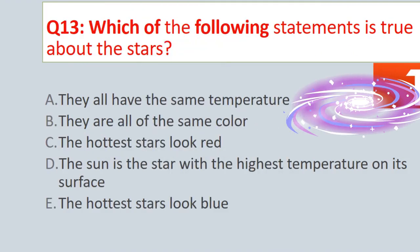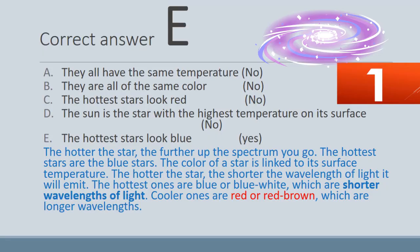Question No. 13. Which of the following statements is true about the stars? A. They all have the same temperature. B. They are all of the same color. C. The hottest stars look red. D. The sun is the star with the highest temperature on its surface. E. The hottest stars look blue. The correct answer is E. The hotter the star, the further up the spectrum you go. The hottest stars are blue stars. The color of a star is linked to its surface temperature; the hotter the star, the shorter the wavelength of light it emits. The hottest ones are blue or blue-white, while cooler ones are red or red-brown.